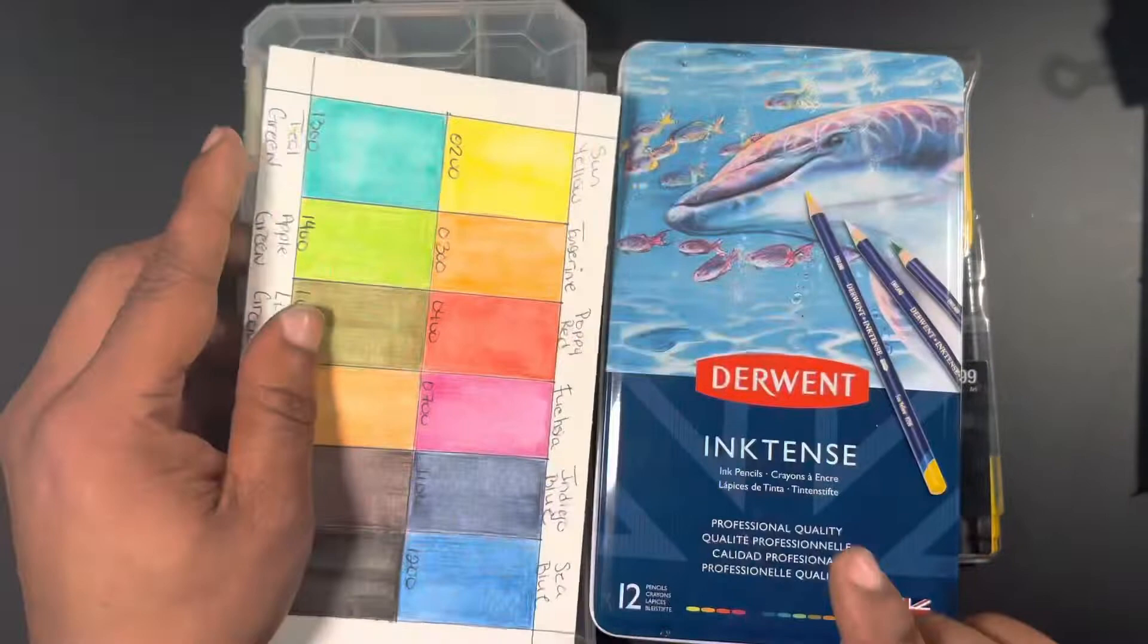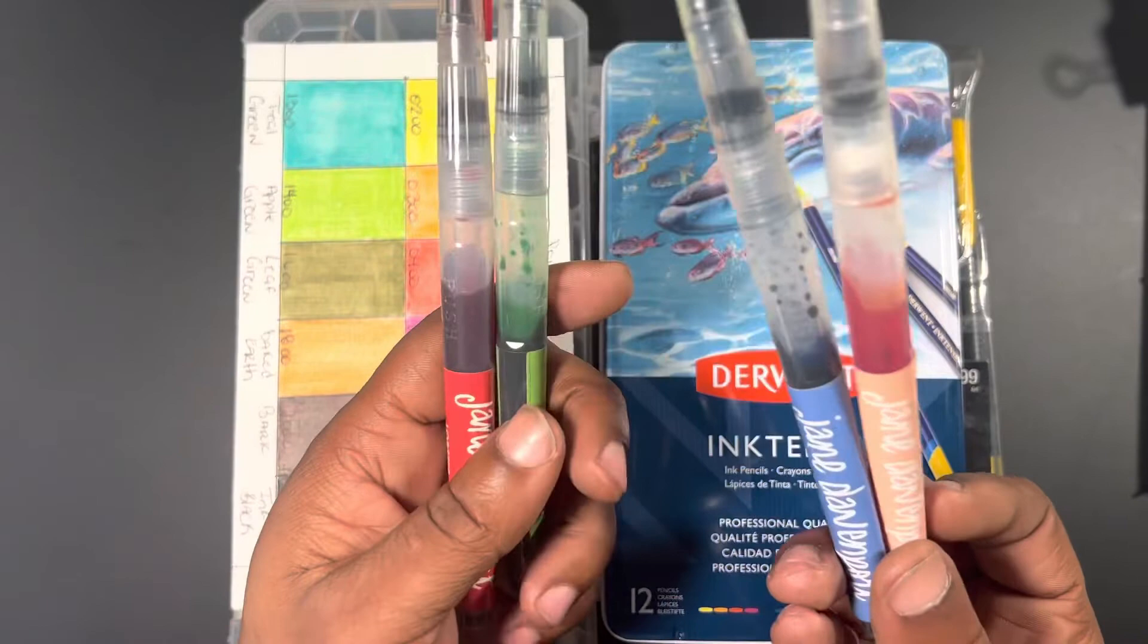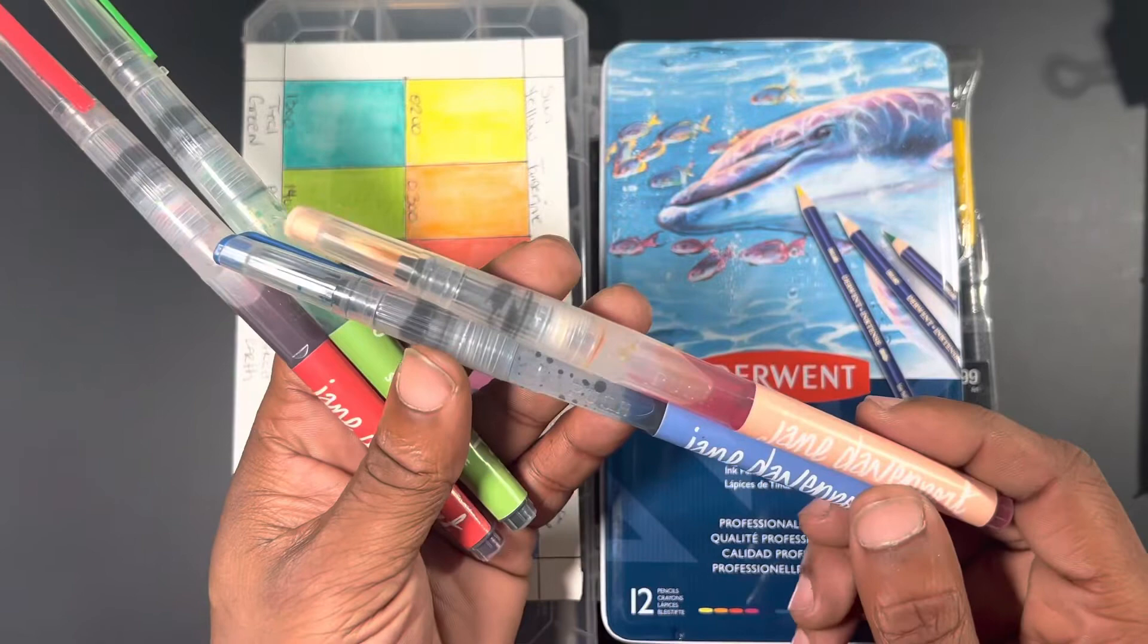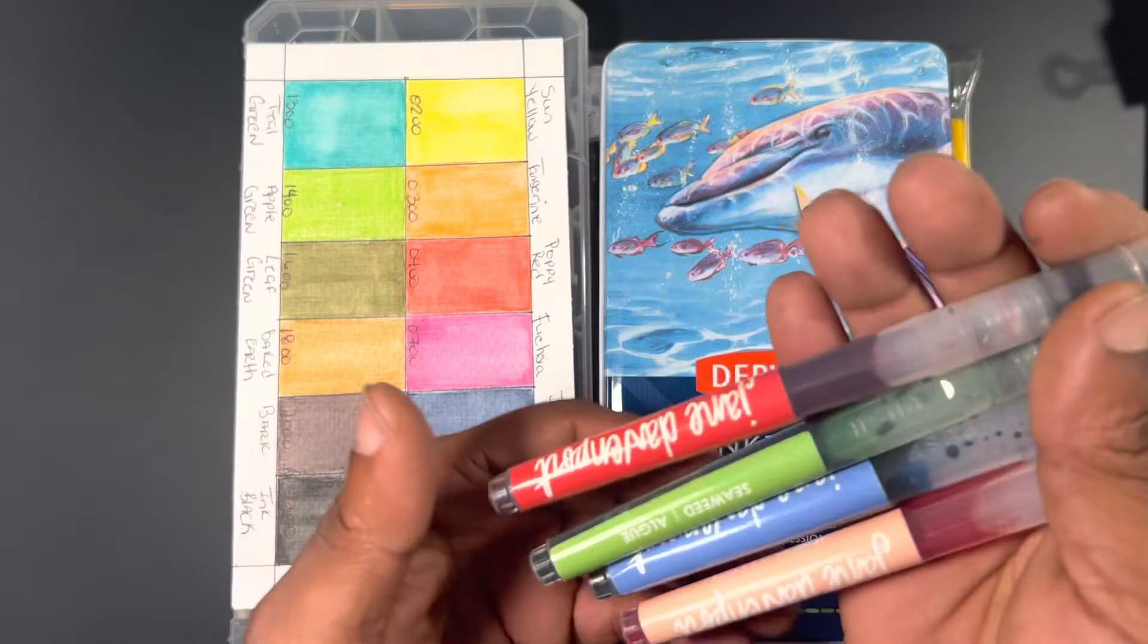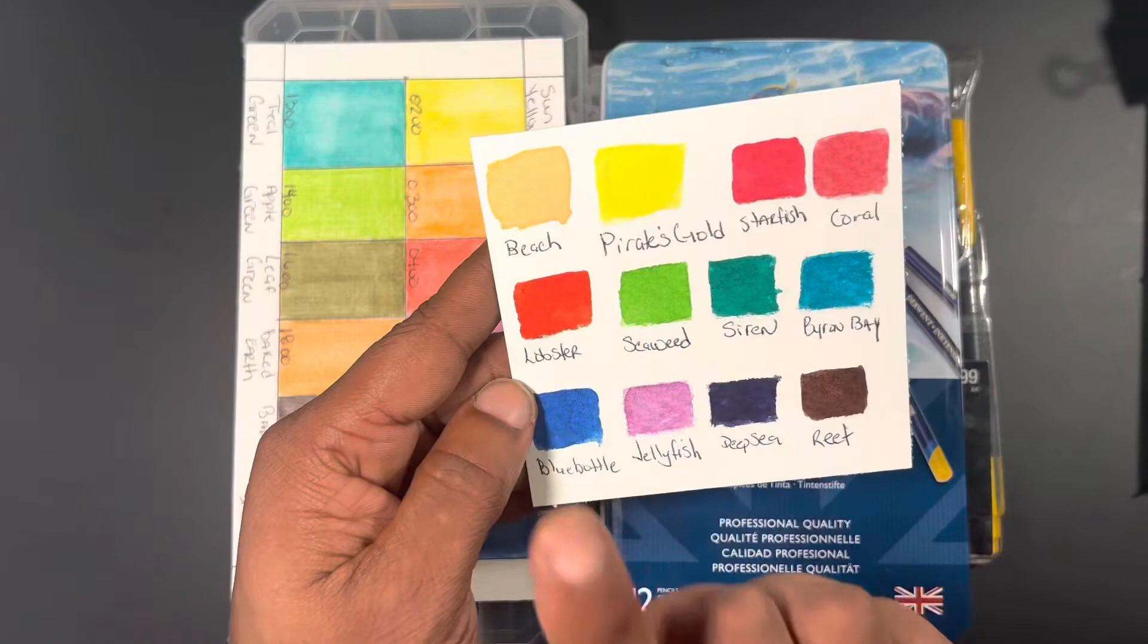I'm also going to be using some Jane Davenport Mermaid Markers. These are like a water-soluble ink or dye-based watercolor that are in water brushes. These are a discontinued product you can't really find anymore. I've had them for about two and a half, maybe even three years, and I figured now is the perfect time to go ahead and break them out and start using them.